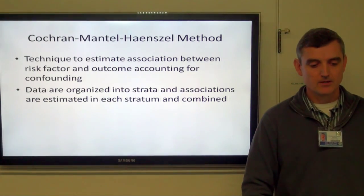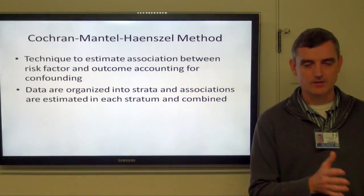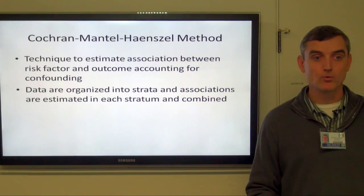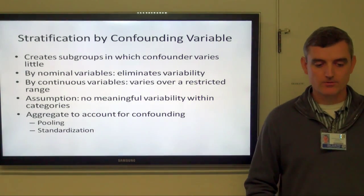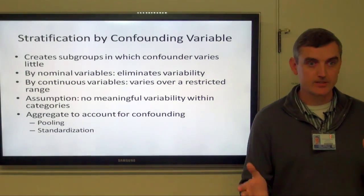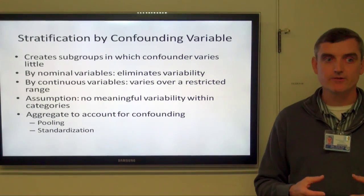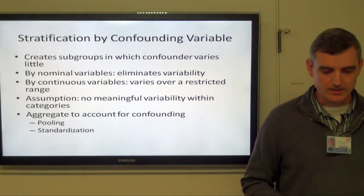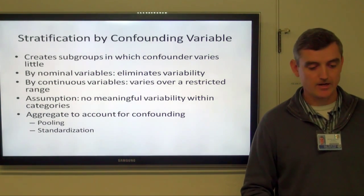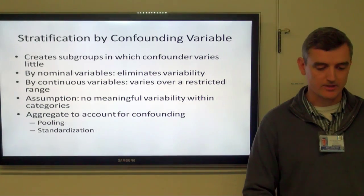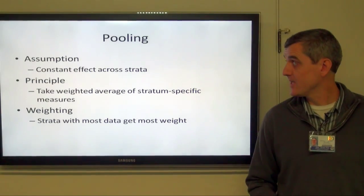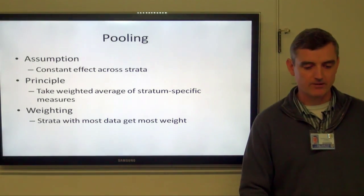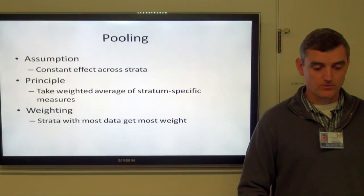The idea is to stratify the data according to levels of that third variable and then calculate a pooled estimate of the relative risk. You create subgroups where the confounder varies less. If it's a discrete variable like whether or not they wore a seatbelt, all of that variability is gone. If it's continuous like age, you decrease that variability with the assumption there's no meaningful variability within the categories. By pooling the data, you assume a constant effect across the strata, and take the weighted average of those stratum-specific measures — whoever has the most data gets the most weight.